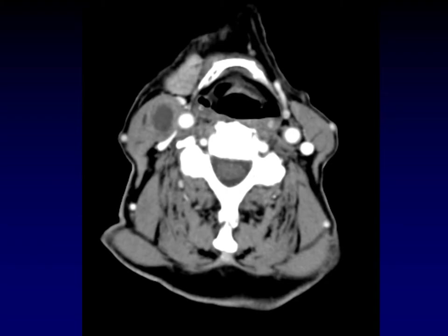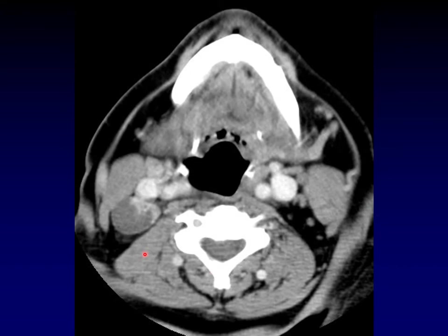Here's a lymph node that is clearly abnormal: enlarged, with a thick rim and a necrotic center — classic appearance for squamous cell carcinoma in the neck. You can even see it has lost its surrounding fat boundaries, indicating extracapsular spread. Here's another lesion with a thin, imperceptible wall around the majority of the lymph node but with mural nodularity along another surface — classic appearance for metastasis from papillary thyroid carcinoma, sometimes with fine speckled calcification in the mural nodule.